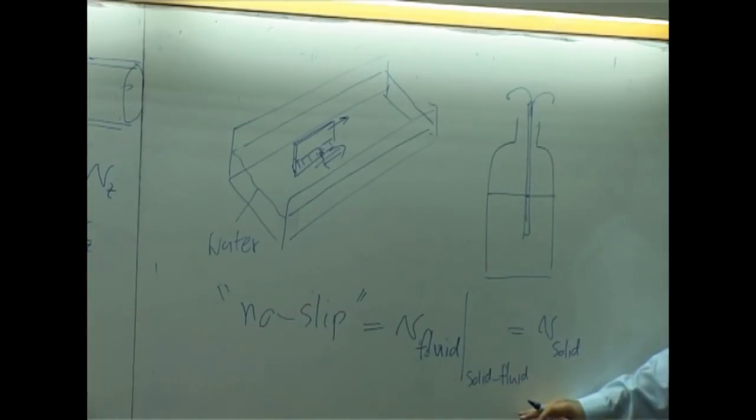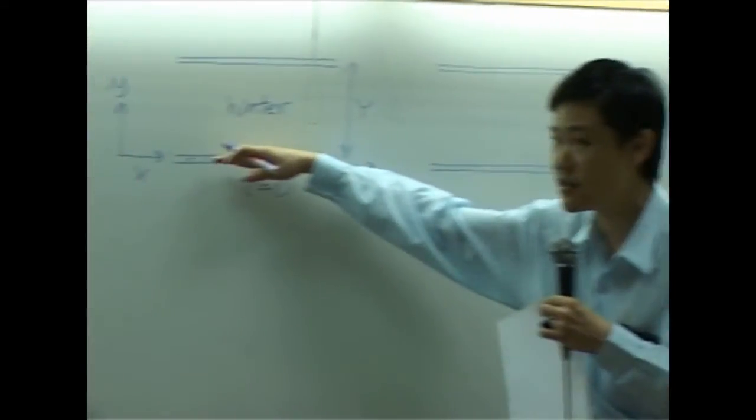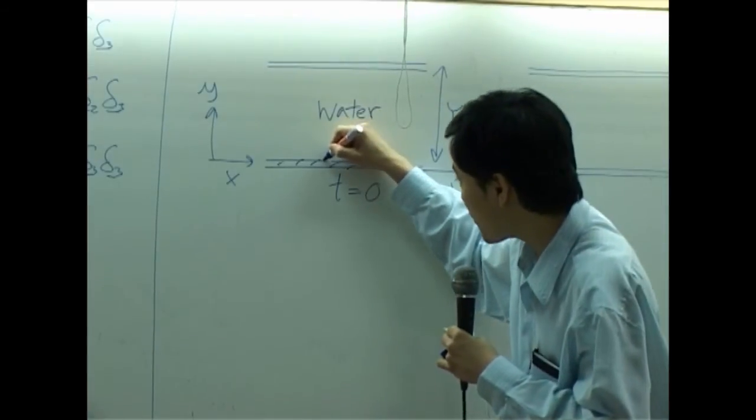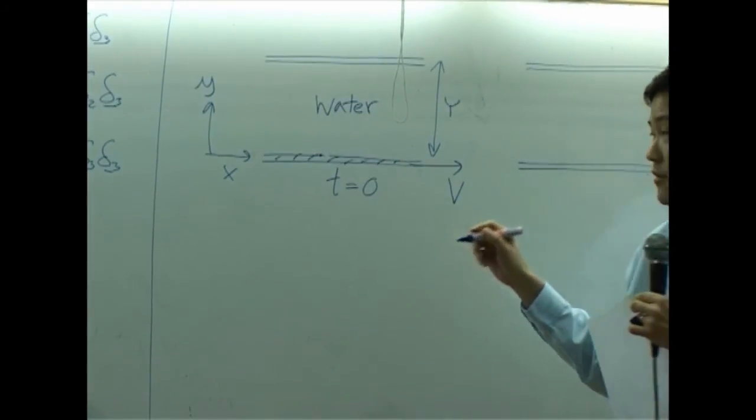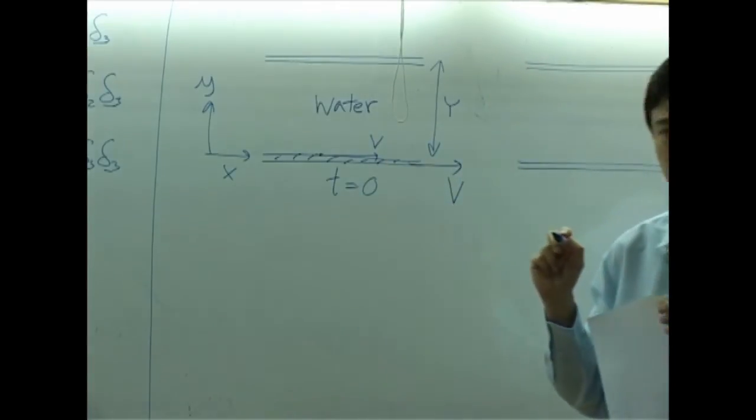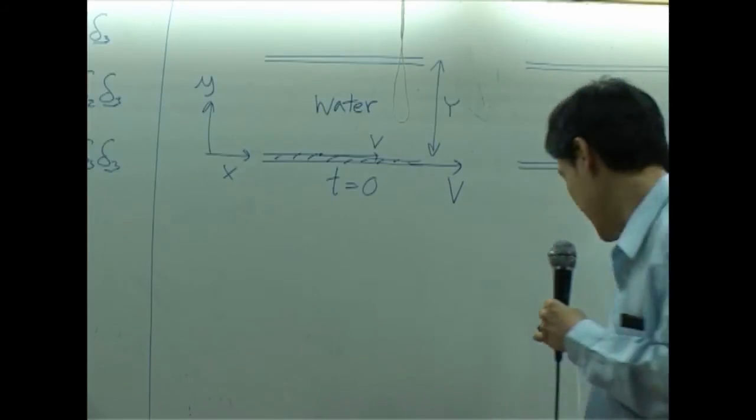So if this condition is applied, that means whenever you pull this piece of solid to the right, water right at the interface here should have velocity V as well.